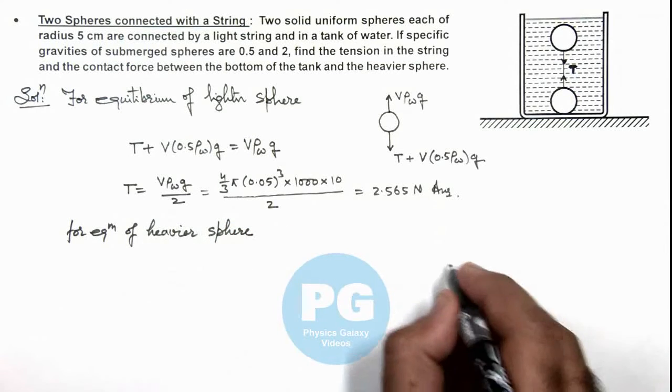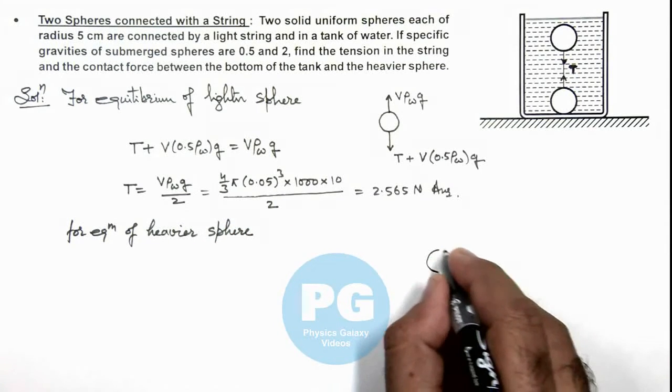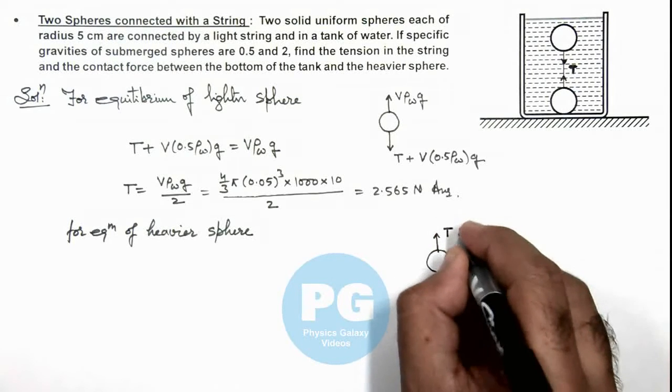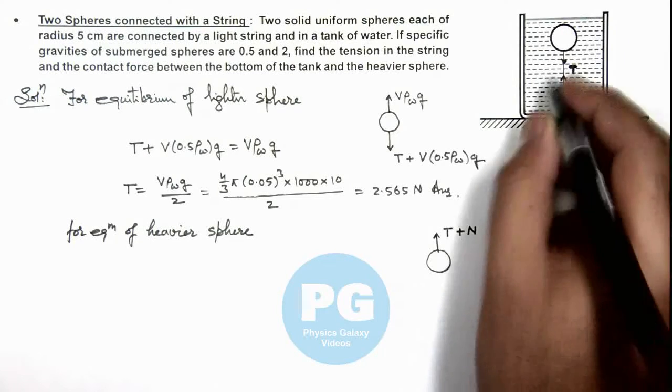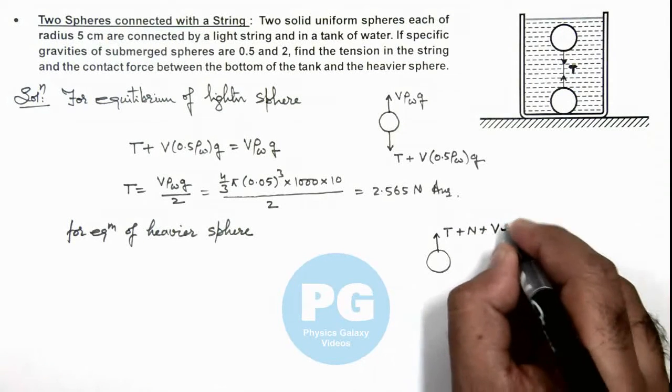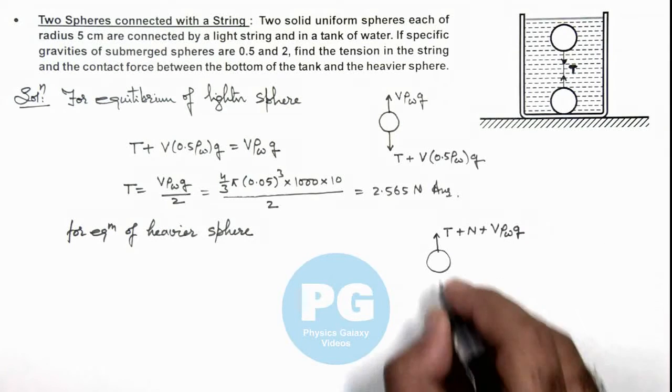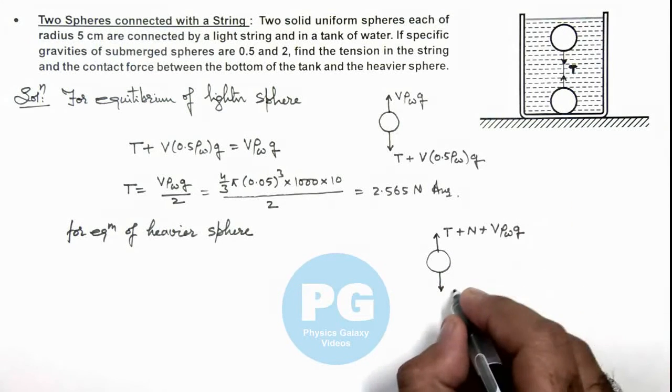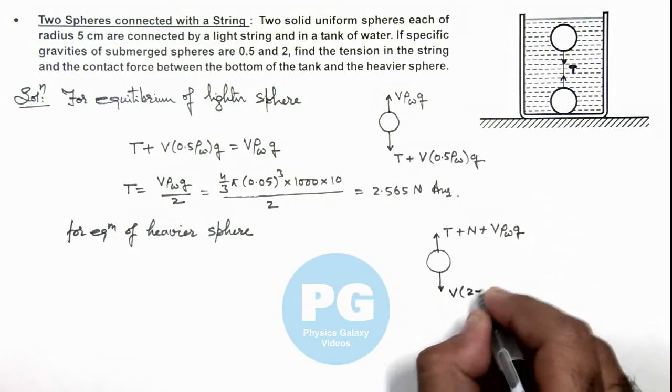Here, we can again draw its free body diagram where it'll be experiencing a tension in upward direction, normal reaction in upward direction and buoyant force that is V ρ water g in upward direction and downward direction it is only experiencing its weight which is V multiplied by twice of ρ water g.